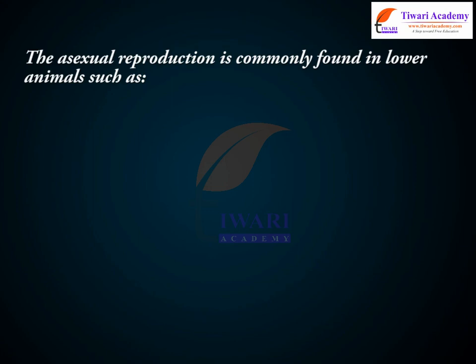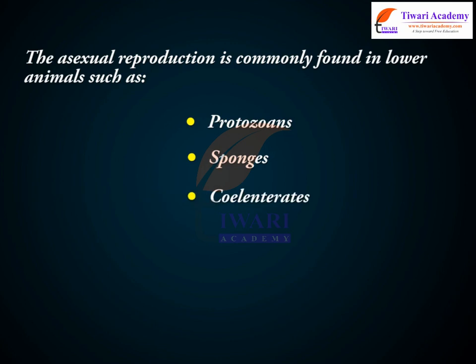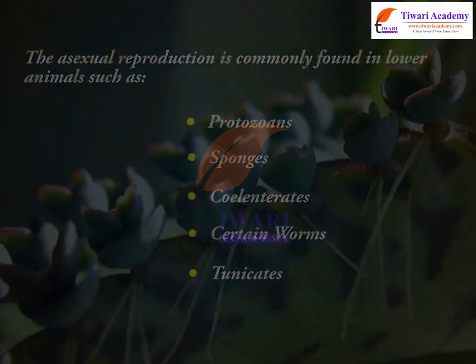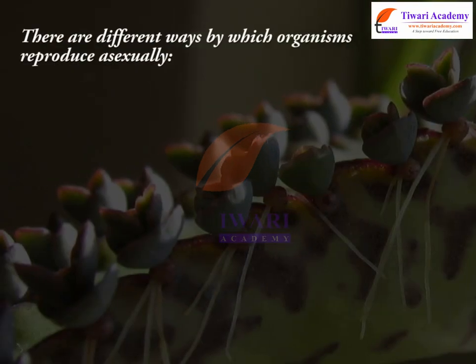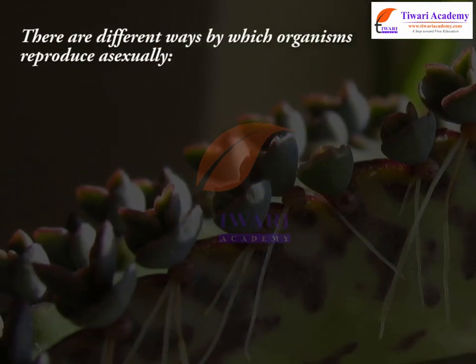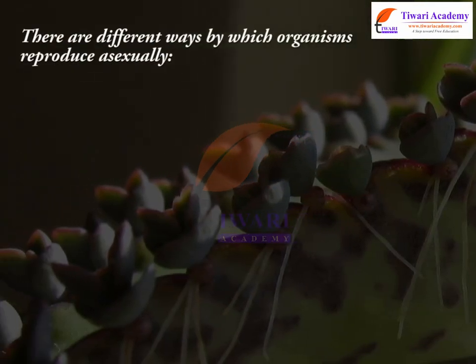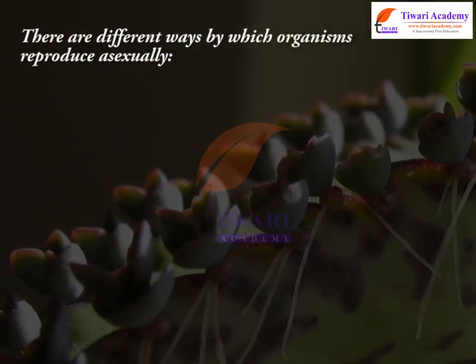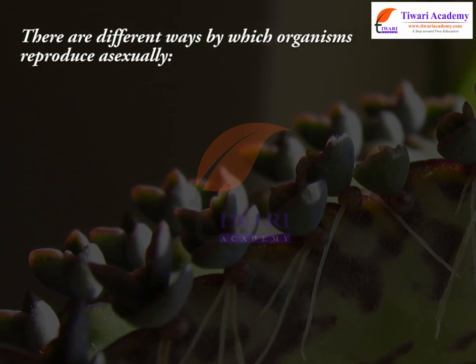Asexual reproduction is commonly found in lower animals, such as protozoans, sponges, cnidarians, certain worms, and tunicates. There are different ways by which organisms reproduce asexually.